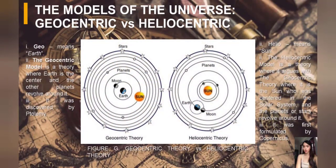Models of the Universe: 'Geo' means Earth. The geocentric model, as we can see in the figure, places the Earth at the center of the solar system, with the planets revolving around it. It was discovered by Ptolemy. On the other hand, heliocentric — with 'helio' meaning sun — argues against the geocentric model, placing the sun at the center of the solar system with planets revolving around it. It was formulated by Copernicus.